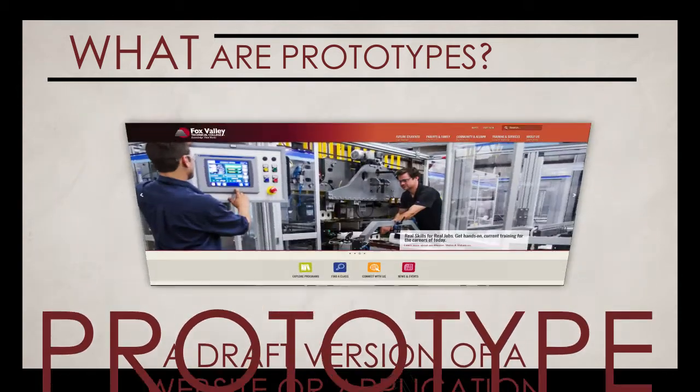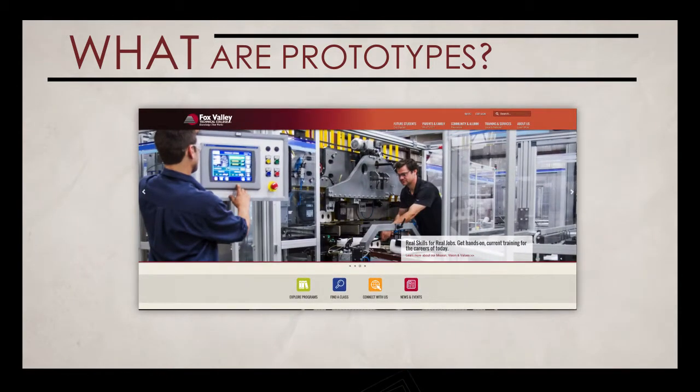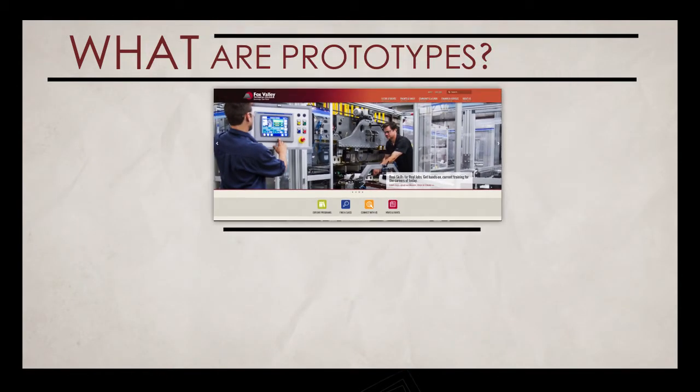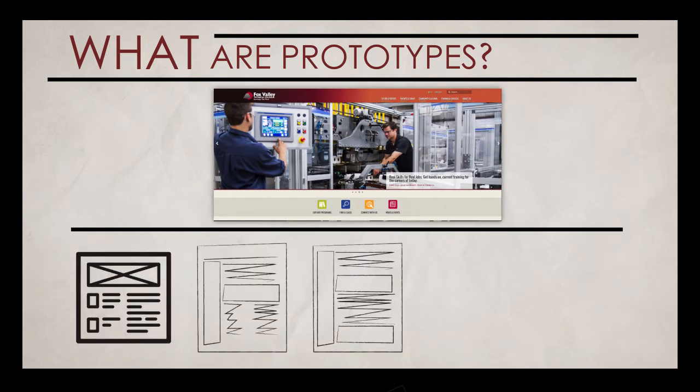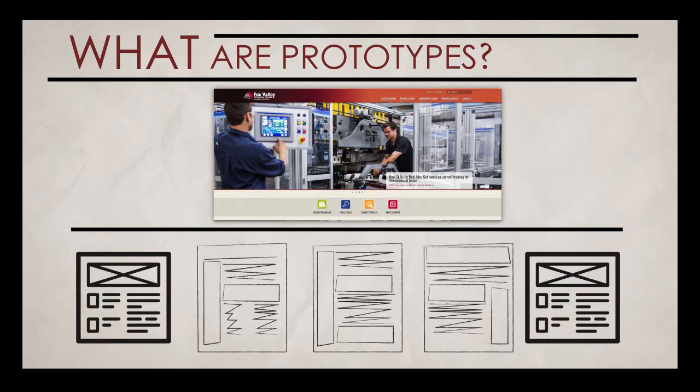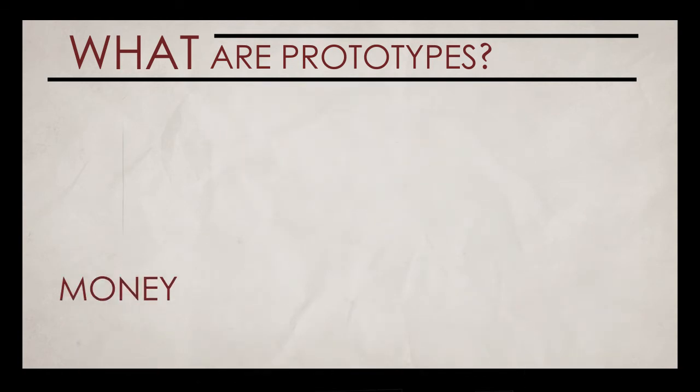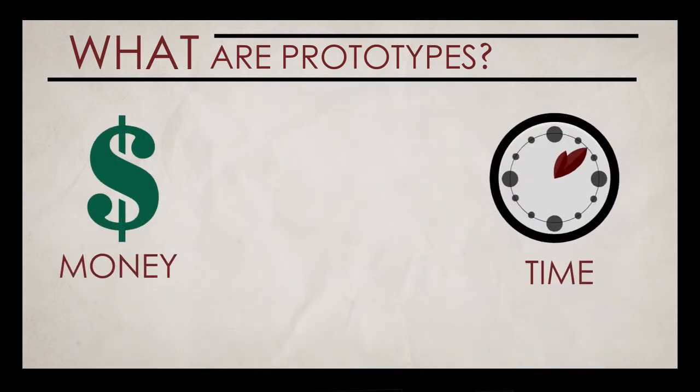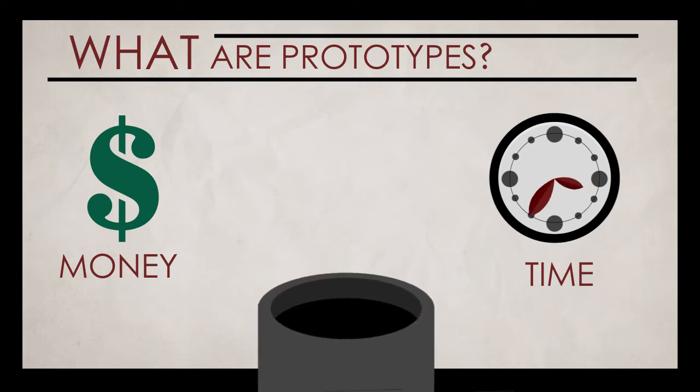Instead of building the entire project, a slimmed-down version is created in a short period of time. It can represent the full-blown site, or it can simply include a few specific pages. These draft versions save money and programming time, and prevent wasting resources.